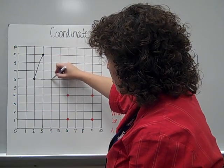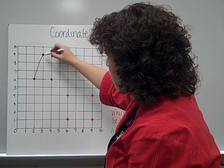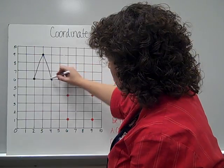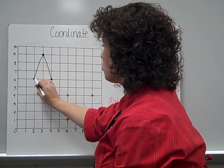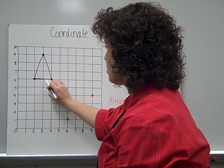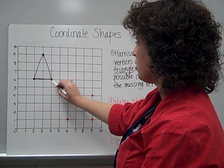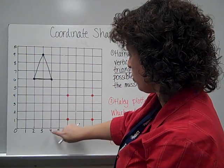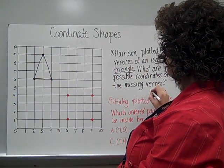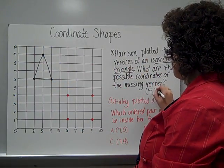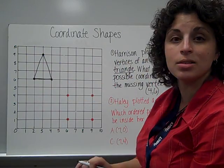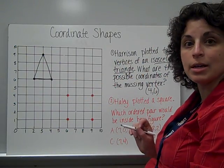Then right here, I could connect this and the right and left would be congruent and this would be my flat bottom side. And so, right here was what point, what coordinate? Four, six. So a possible vertex to finish this isosceles triangle would be four, six.